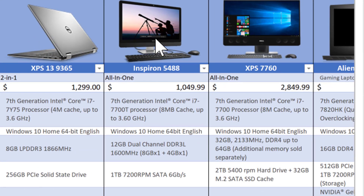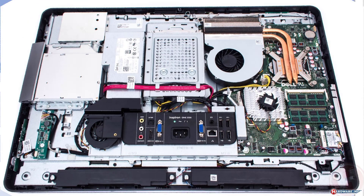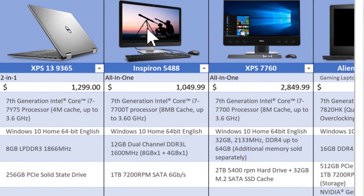Moving over to the Inspiron all-in-ones — the reason these are called all-in-one is there is no tower. The monitor, motherboard, processor, and memory are all behind the screen. These can be touchscreen in many cases.